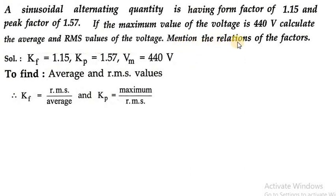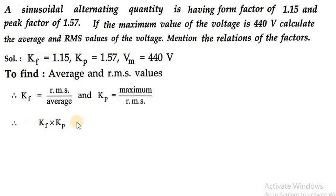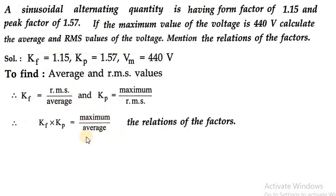In this numerical they have also asked the relations of the factors. If we take the product of Kf and Kp, that means Kf multiplied by Kp, we will have RMS divided by average, multiplied by maximum divided by RMS. The RMS value cancels out, so the product Kf × Kp equals the ratio of maximum value divided by average value. This is the relation between these two factors.